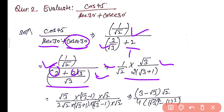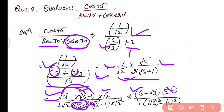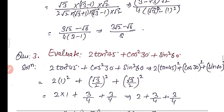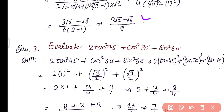We get root 3 upon root 2 times (root 3 plus 1). To rationalize the denominator, multiply and divide by (root 3 minus 1). Using the identity (a+b)(a−b) = a²−b², the denominator becomes 3 minus 1 equals 2, and numerator becomes root 3(root 3 minus root 2 times root 3). After simplifying with root 2 multiplied through, and 2 into 4 gives 8, we get the final answer as (3 root 2 minus root 6) upon 8.